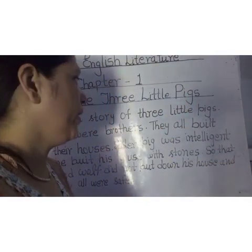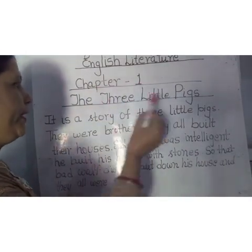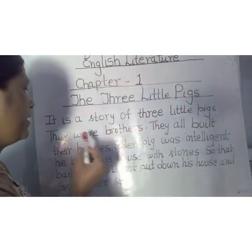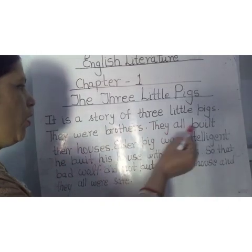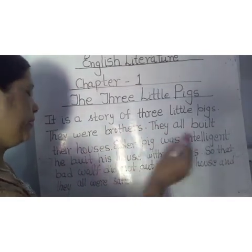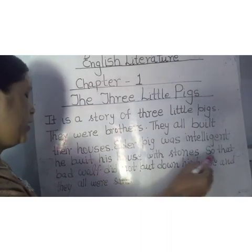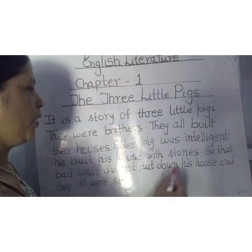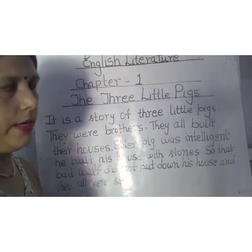Students, have a look. Chapter 1 — The Three Little Pigs. It is a story of three little pigs who were brothers. They all built their own houses. The elder pig was intelligent and built his house with stones, so the bad wolf could not put down his house and they were all saved.